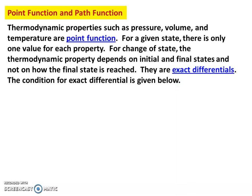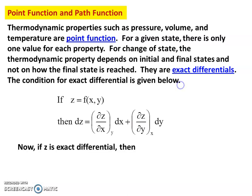Point function, path function. Thermodynamic properties such as pressure, volume, and temperature are point functions. For a given state, there is only one value for each property. For a change of state, the thermodynamic property depends on the initial and the final states, and not on how the final state is reached. They are exact differentials. The conditions for exact differential are given below. The property is the point function, and the point function is the exact differential.